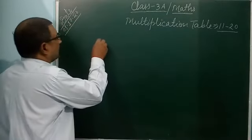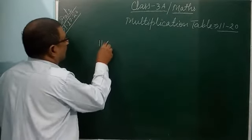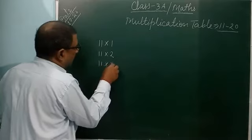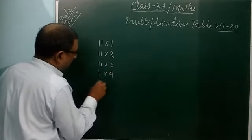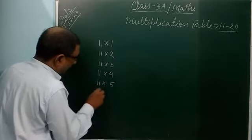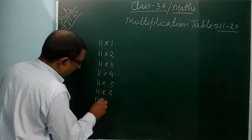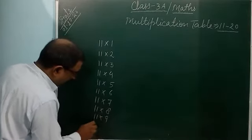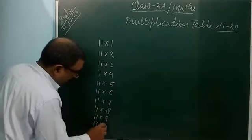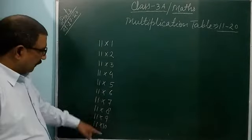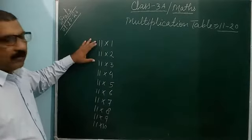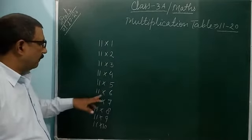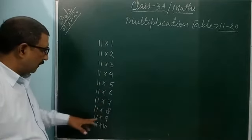Like that: 11x1, 11x2, 11x3, 11x4, 11x5, 11x6, 11x7, 11x8, 11x9, 11x10. So you can see 1 to 10, means 11 multiplied by 1, by 2, by 3, by 4, by 5, by 6, by 7, by 8, by 9, by 10.